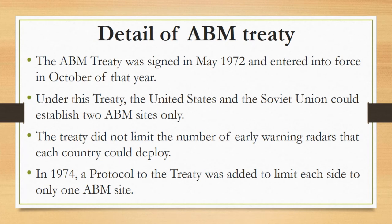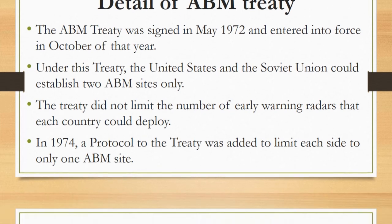The treaty stipulated that future radars be located on the country's borders facing outwards. In 1974, a protocol to the treaty was added to limit each side to only one ABM site. Under the treaty, each member could verify other parties' compliance using national technical means of verification, such as satellite reconnaissance.